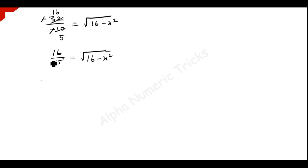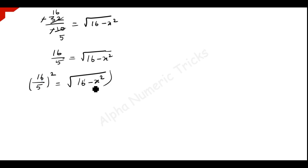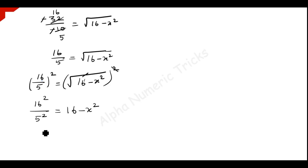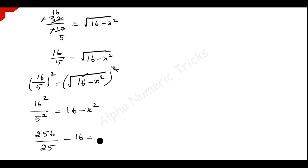We have to eliminate this square root, so we square on both sides. 16 by 5, the whole squared, is equal to square root of 16 minus x squared, the whole squared. So 16 squared divided by 5 squared is equal to 16 minus x squared. 16 squared is 256 divided by 25. Taking minus 16 to this side, so minus 16 is equal to minus x squared.